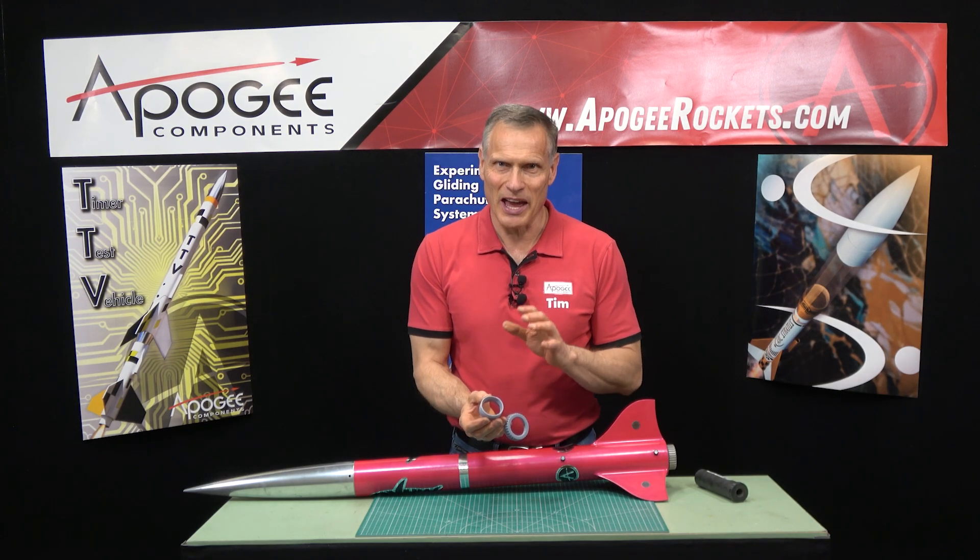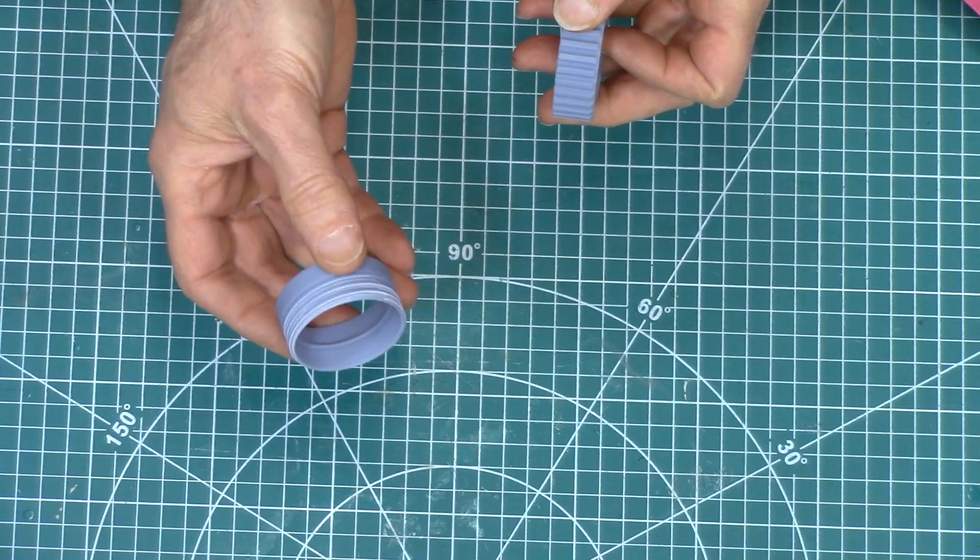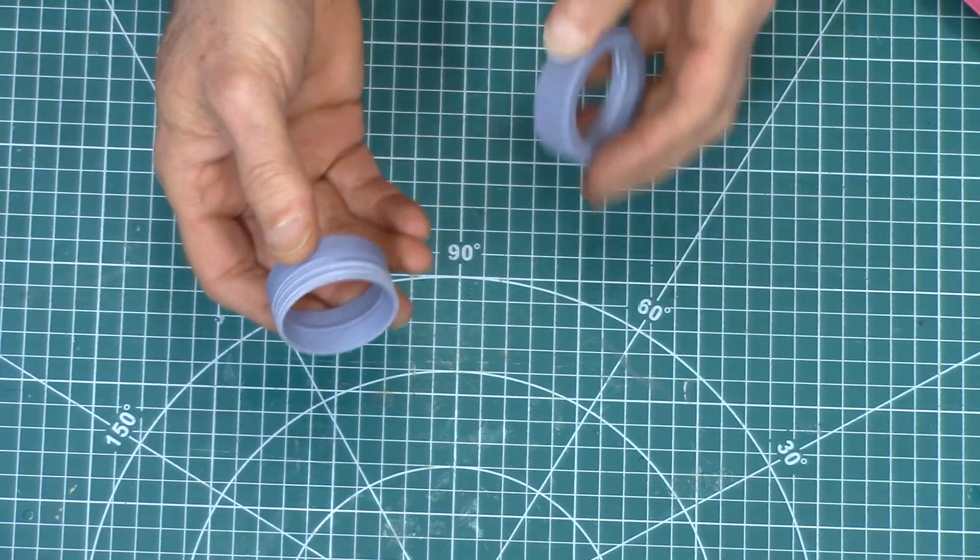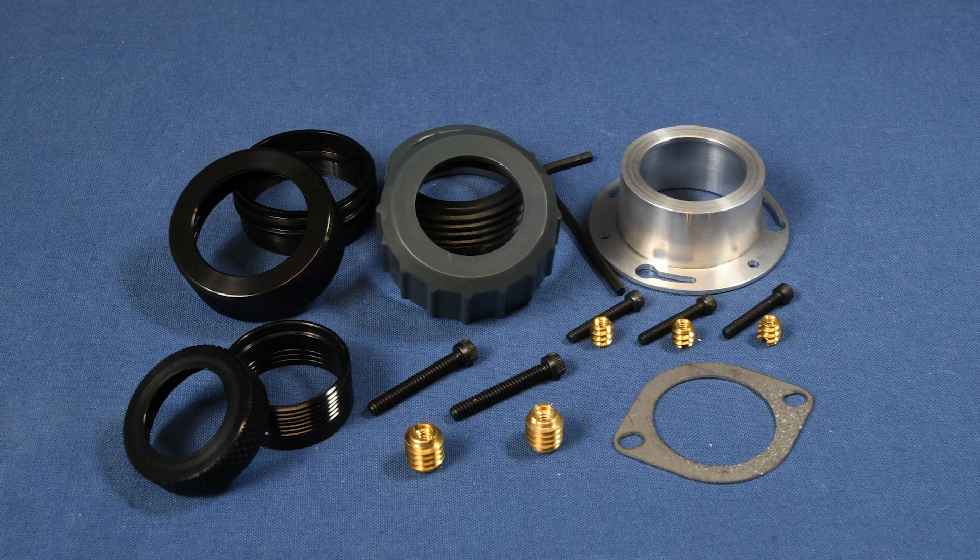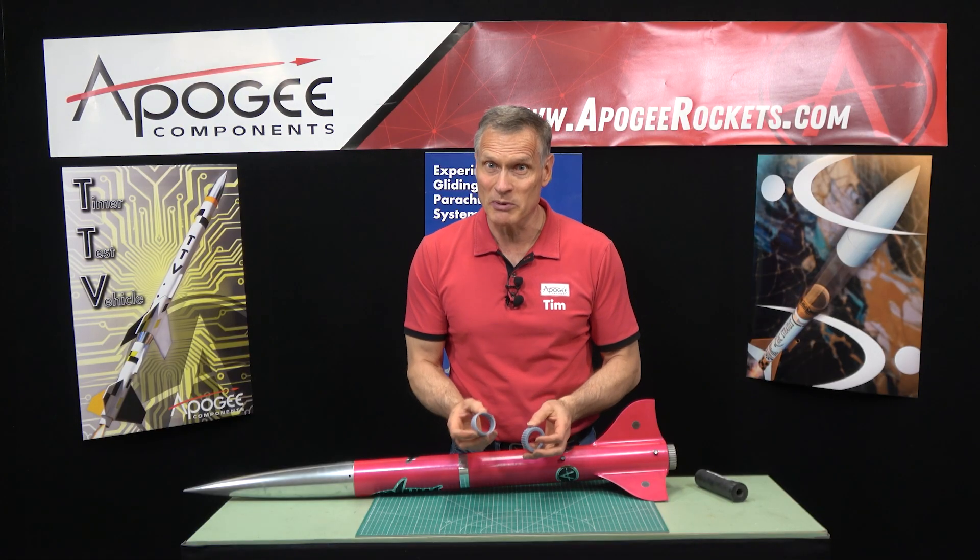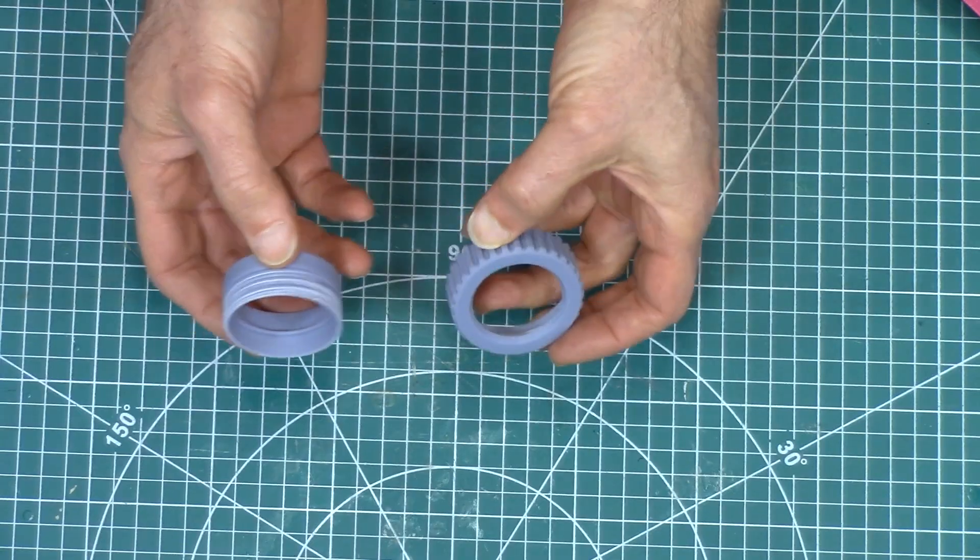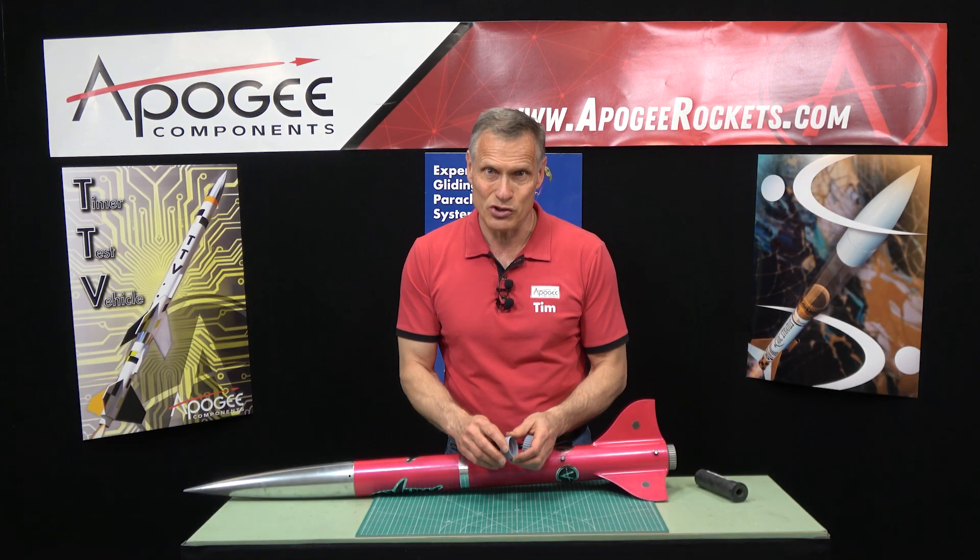I'd like to introduce to you the Apogee 38 millimeter engine mount retention system using 3D printed components. You've probably been familiar with screw-on engine retainers before, but most of them are aluminum. As you know, aluminum is expensive, so we created some 3D printed pieces that will do the same job but are much cheaper.